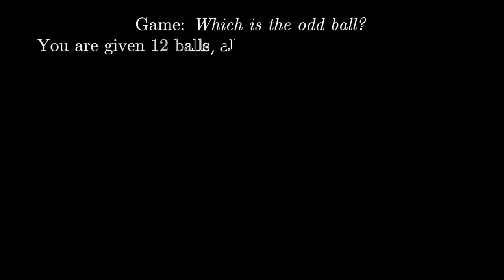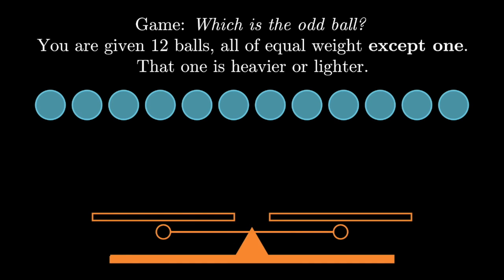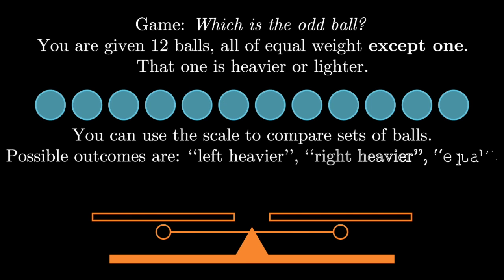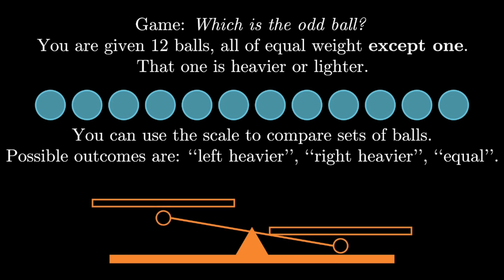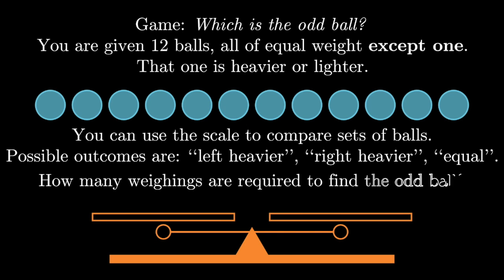David Mackay used to have a fun little game in which you could understand the value of entropy for making decisions that are highly informative. In this case, imagine that there are 12 balls that are all of equal weight except for one, and that one can be a little bit lighter or a little bit heavier than the others. You have a scale, and you can put equal numbers of balls on each side. It will then tell you if they're equal or if one side or the other is heavier. The game is to use as few weighings as possible to determine which one is the odd ball. I suggest pausing the video for a minute to think about how many weighings you think it should take. Interestingly, the answer is it only takes three weighings.